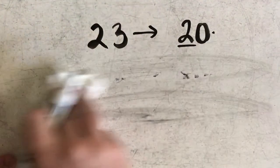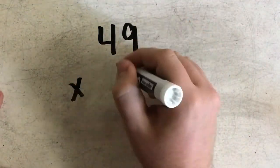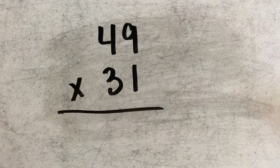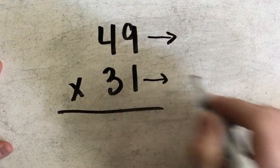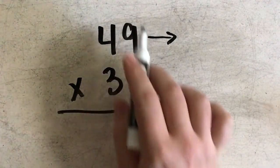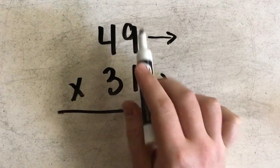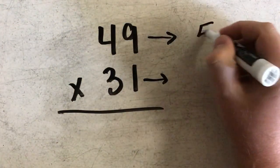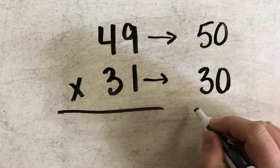Let's give another example. If I had 49 times 31. So again, I want to take both of these factors and round them to the highest place value. In this case it would be the tens place. So 49 would round to 50, and 31 would round to 30.